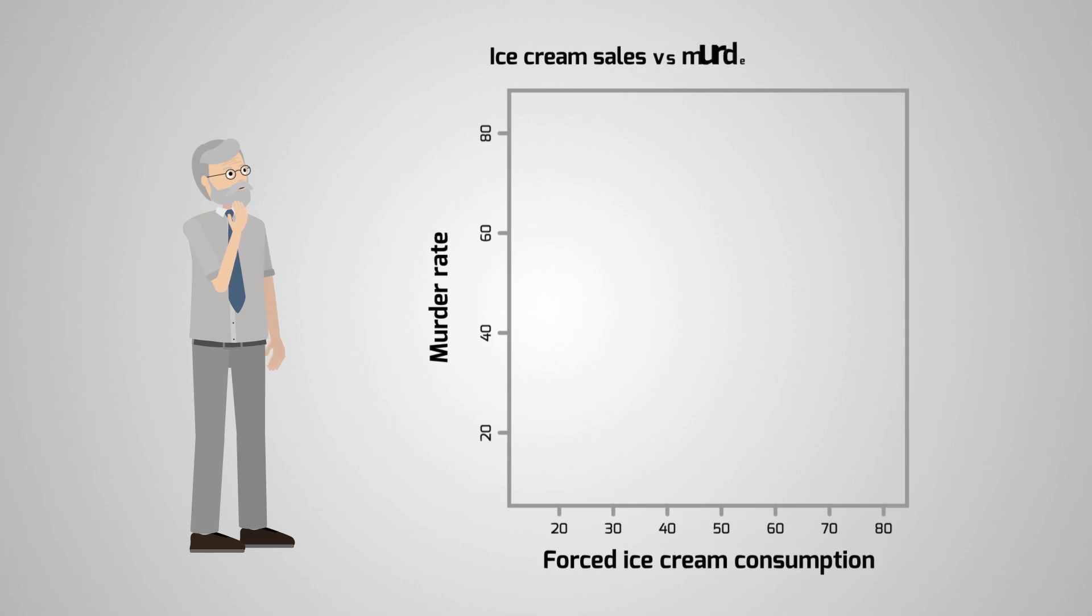Consider another example. Ice cream sales correlate with homicides. Does this mean ice cream consumption causes murder? If we removed ice cream consumption, would this be accompanied by a drop in the murder rate?